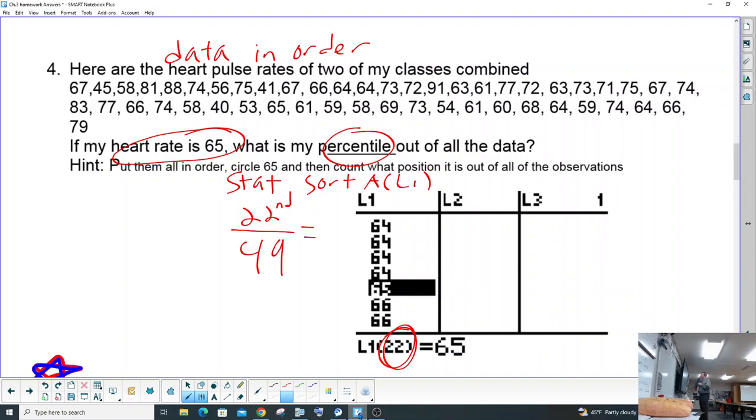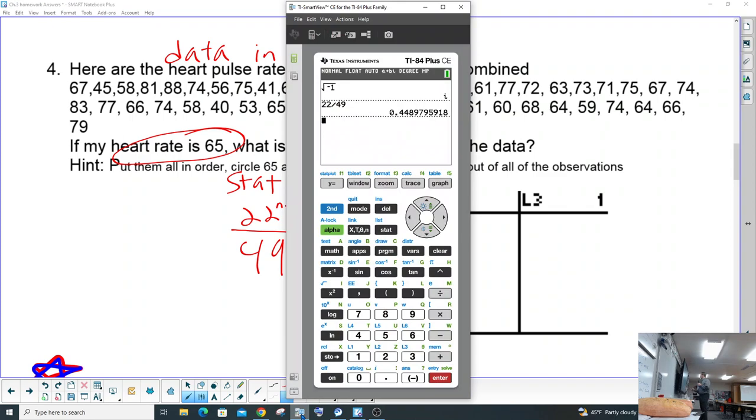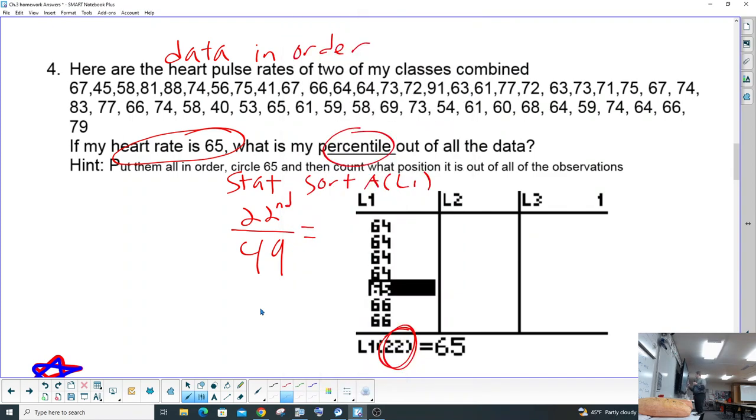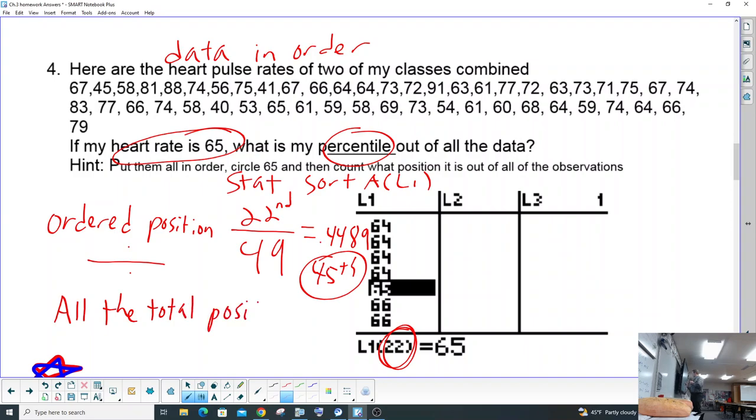Okay, we're back. Getting ready for our STEM expo. So the 22nd divided by 49, which is the 0.4489 percentile. So we would round 0.4489 up to the 45th percentile. That's our answer. So that's how you find a percentile. It's the ordered position of what you want, the ordered position divided by all the total data, or all the total positions.